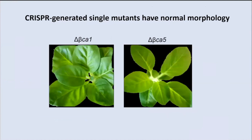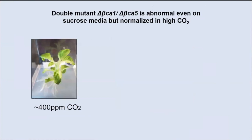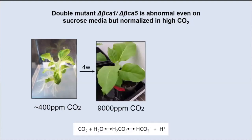The single mutants — CA1 knocked out and CA5 knocked out — have completely normal morphology and look just like regular tobacco plants. However, the double mutant that knocks out both is abnormal even on sucrose medium — it's barely getting along. But if you transfer it to high CO2, the maximum we can put in our growth chambers in Weill Hall, there is normalization, likely because at high CO2 there's some spontaneous conversion of bicarbonate and CO2 that drives the reaction to give you enough bicarbonate.